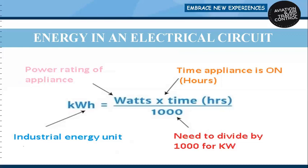The industrial energy unit is the kilowatt-hour, calculated based on the power rating of the appliance and the time the appliance is on in hours. Power rating is normally given in Watts. To get kilowatts, divide by 1000, then multiply by time in hours. One kilowatt-hour equals one industrial energy unit.